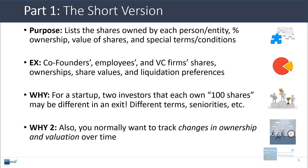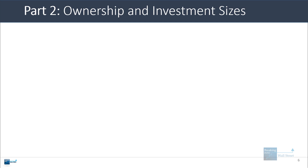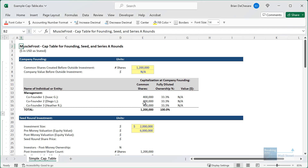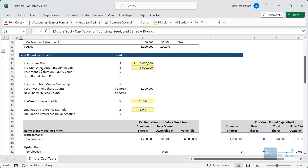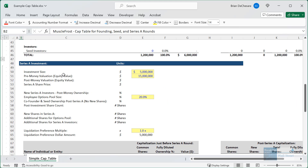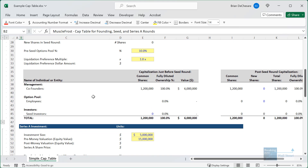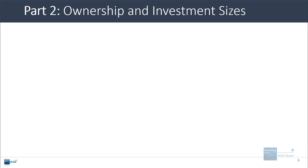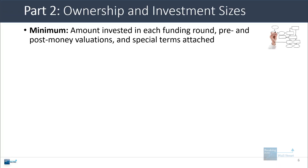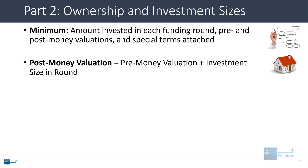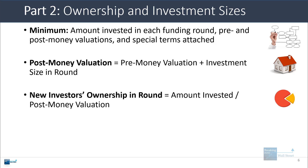That's the short version of cap tables. Now let's go into the calculations. We'll demonstrate this with a simplified example for an early-stage startup that raises a seed round, then a Series A round, and then exits. At the very minimum, you want to show the amount invested in each funding round, the pre- and post-money valuations, and any special terms attached to the funding.